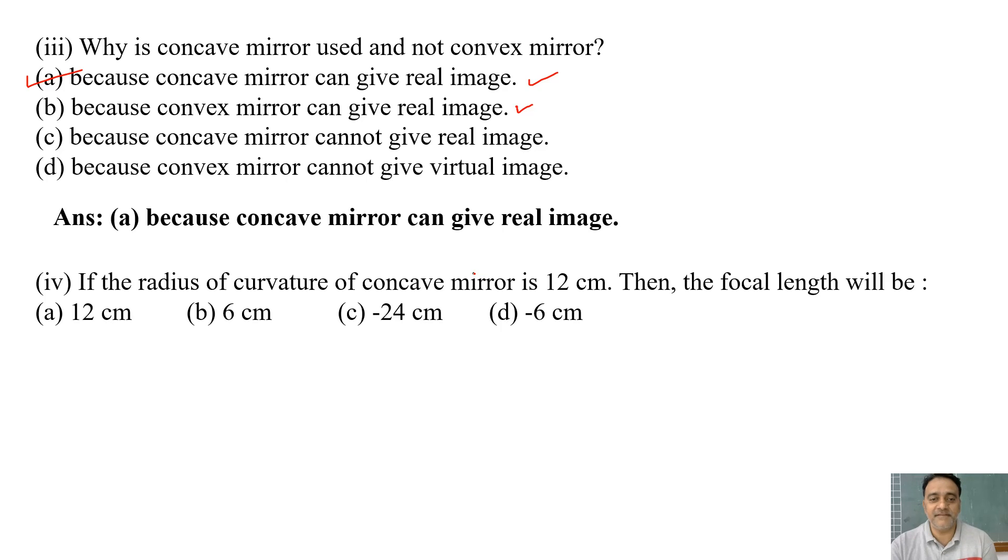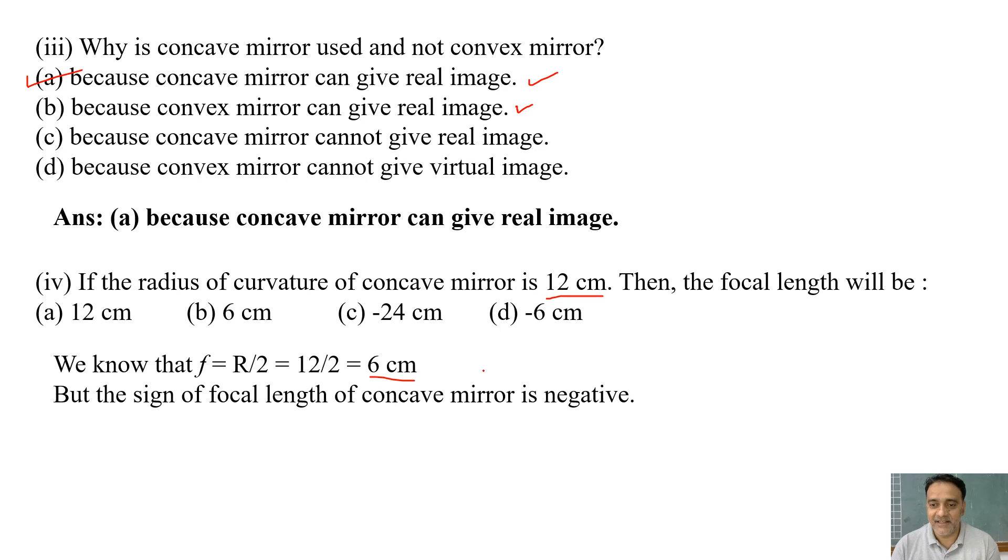And the fourth question. If the radius of curvature of concave mirror is 12 cm, then the focal length will be 12 cm, 6 cm, minus 24 cm, or minus 6. The formula for finding the focal length is R by 2, so that is 12 by 2, which is 6 cm. And we know that the sign of focal length of concave mirror is negative. So therefore F equals minus 6. The correct option is D.